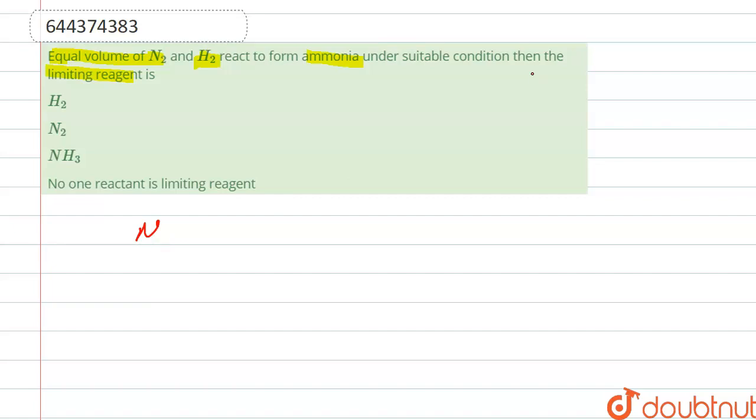When N2 reacts with H2, it forms ammonia, that is NH3. So if we balance, here it is 3 and it is 2. So according to the mole ratio, one mole of N2 needs three moles of H2.